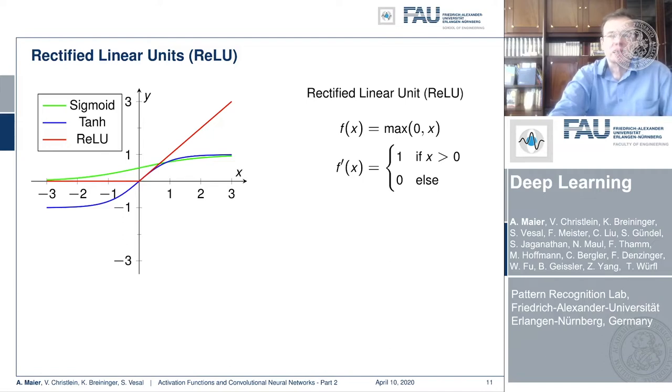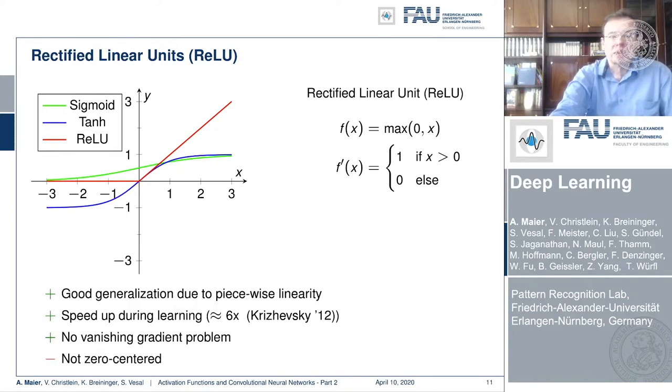Now the ReLU we already encountered and the idea is simply to set the negative half space to 0 and the positive half space to x. This then results in derivatives of 1 for the entire positive half space and 0 everywhere else. So this is very nice because this way we get a good generalization due to the piecewise linearity. There's a significant speedup.